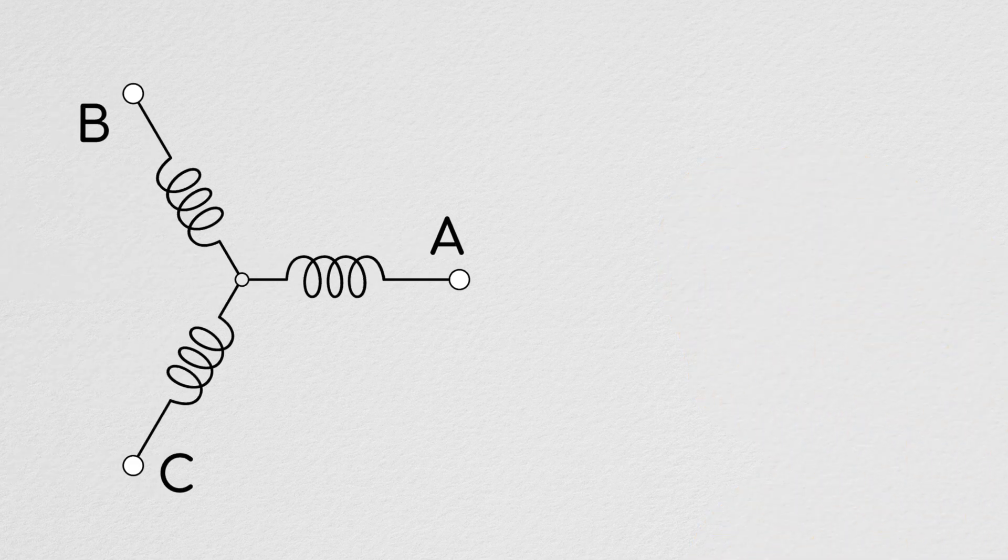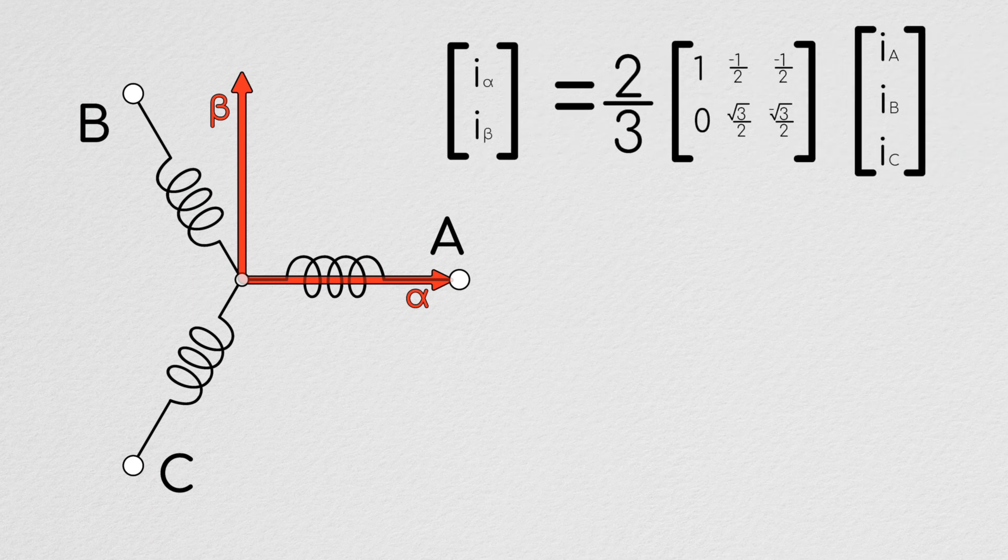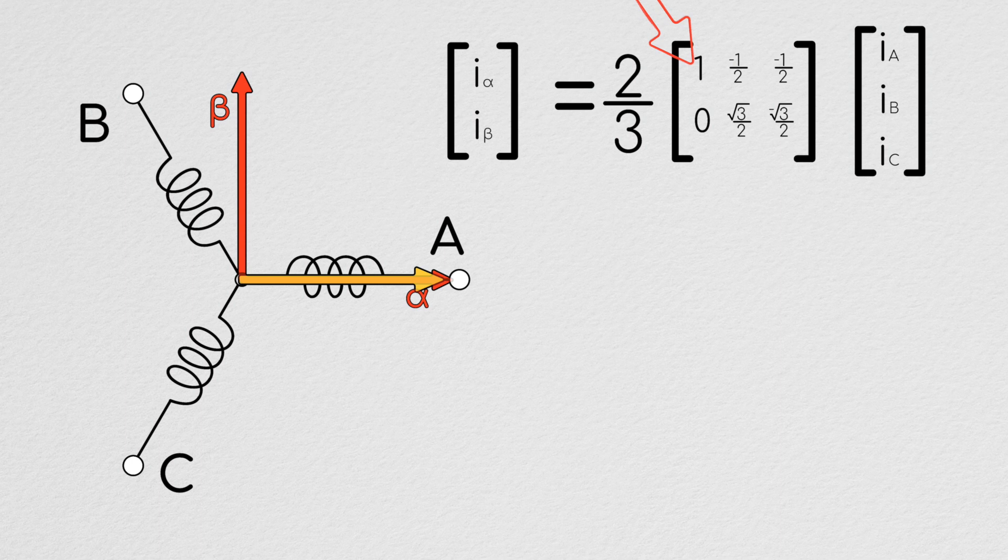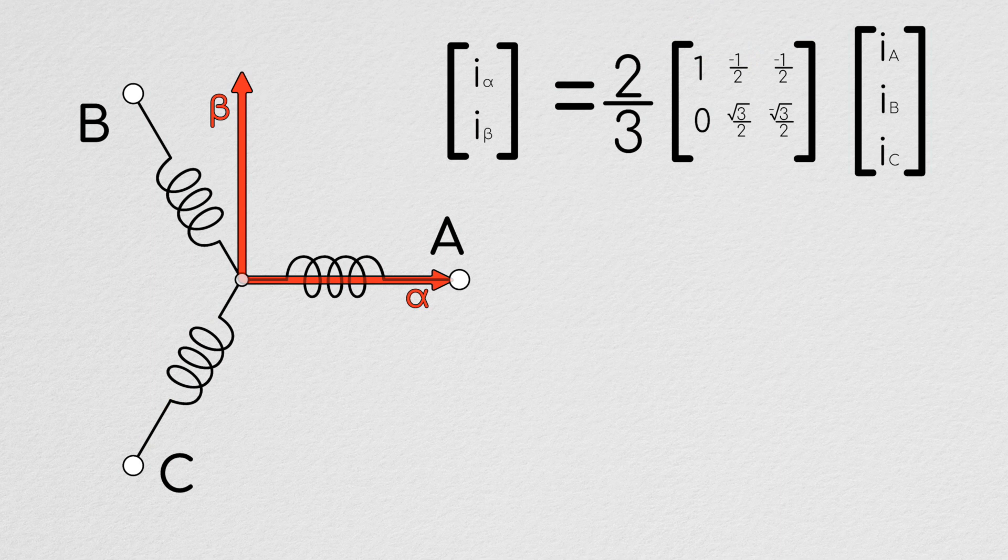First implemented by Edith Clark, who, by the way, was America's first professionally employed female electrical engineer, the Clark transform describes a move from the A, B, and C windings to the alpha-beta frame. We can largely derive this transformation geometrically, seeing that A points strictly in the alpha direction, B points in the negative cosine 60 alpha, sine 60 beta, and C points in the negative cosine 60 alpha, negative sine 60 beta direction. The Clark transform also includes an external two-thirds multiplier, and this keeps the vector's equal magnitudes on either side of the transformation.